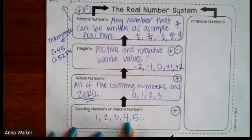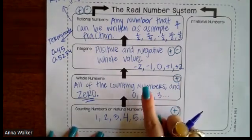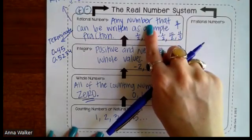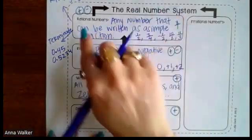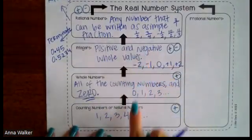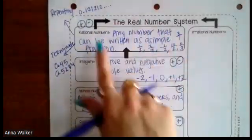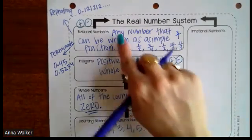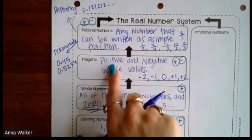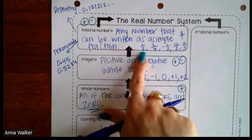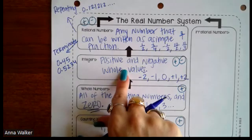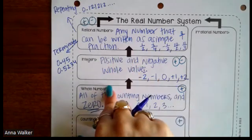Counting numbers are classified as whole numbers, whole numbers are classified as integers, and integers are classified as rational numbers. There are also other things like decimals and other kinds of fractions that didn't fit into those classifications — that's where they fit in the rational number section. But it doesn't go the other way around. Not all rational numbers are integers — for example, one half cannot be an integer because it's not a positive or negative whole value, it's a fraction.